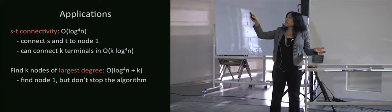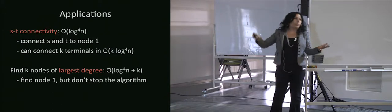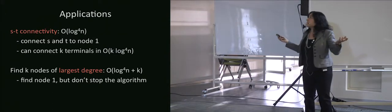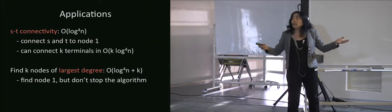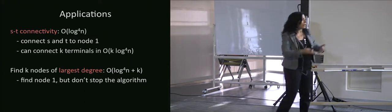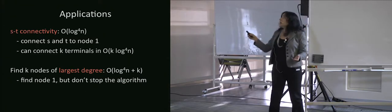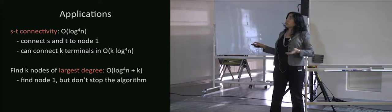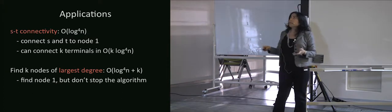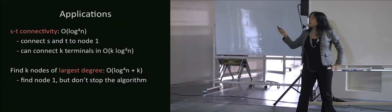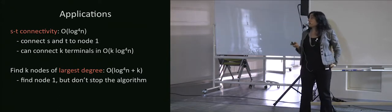As for applications: why would I care about finding the root? For ST connectivity — if I want to connect two sites to each other, I can connect them both to the root, giving order log⁴ n. For K terminals it's K times log⁴ n. If I want to find the K nodes of largest degree, I just get an additive factor of K. We were really surprised that a little difference like this makes a huge difference in how fast a greedy algorithm can find the starting node.